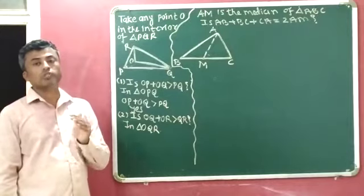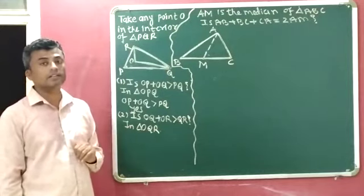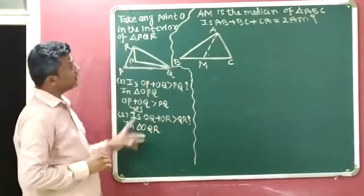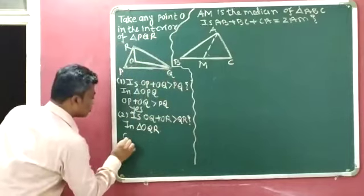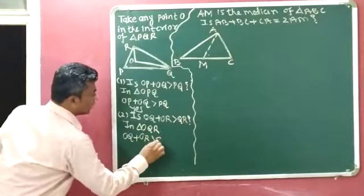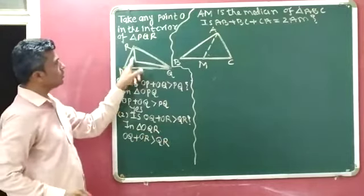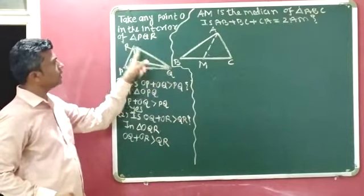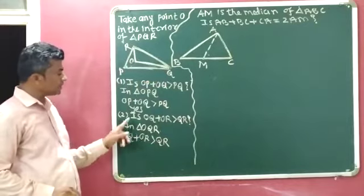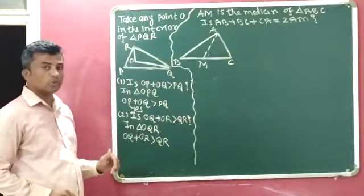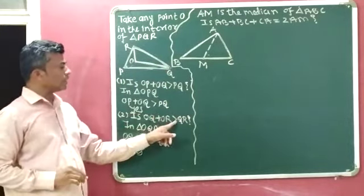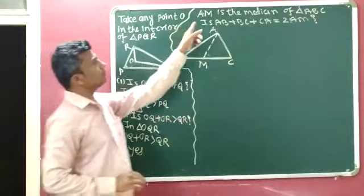The sum of OQ and OR is greater than the third side QR. So OQ plus OR is greater than QR. Our final answer: is OQ plus OR greater than QR? Yes. OQ plus OR is greater than QR. Now question number 3.